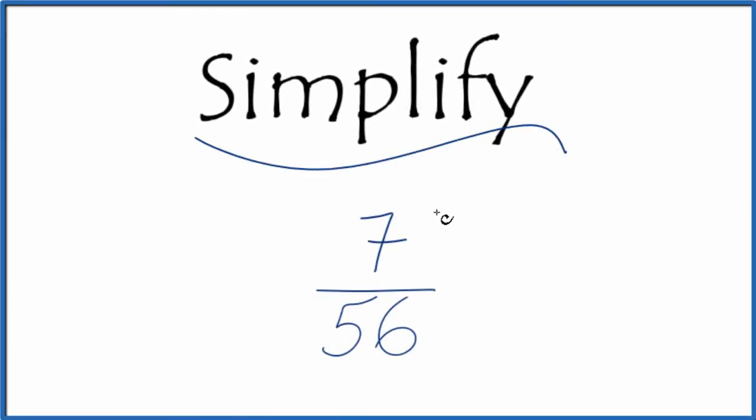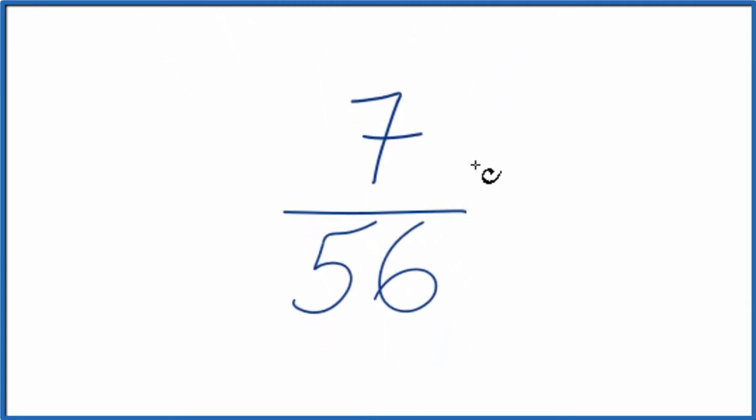If you need to simplify a fraction 7/56, here's how you do it. We're looking for another fraction that's equal. It's an equivalent fraction that has the same value as 7 over 56, it's just that we've reduced it to lowest terms.